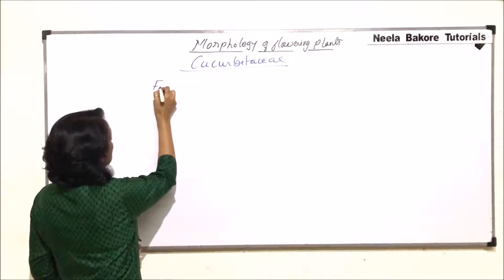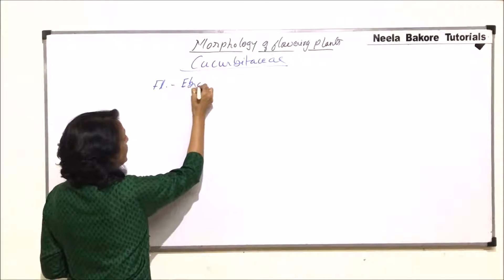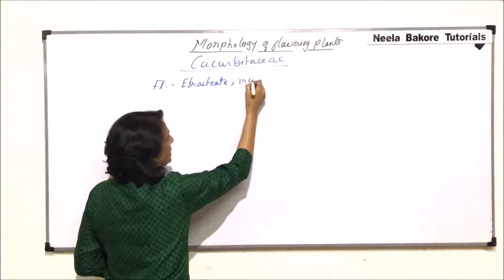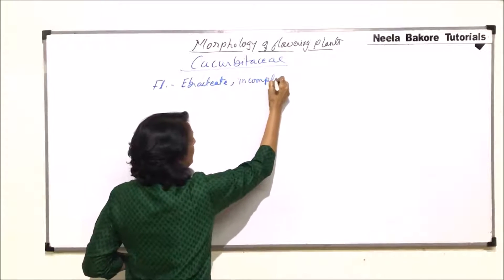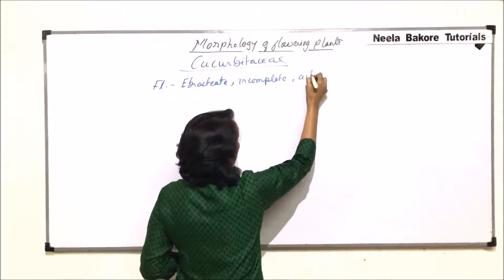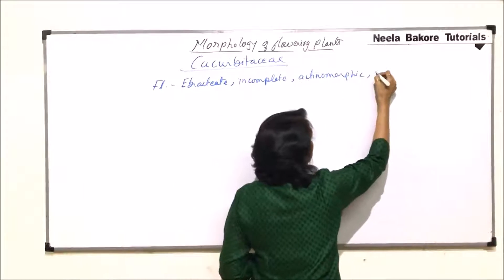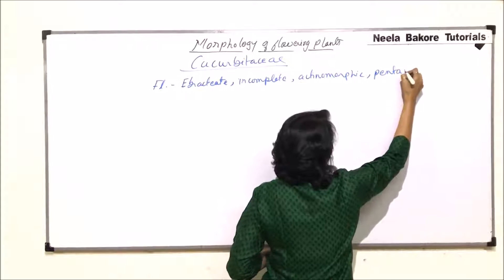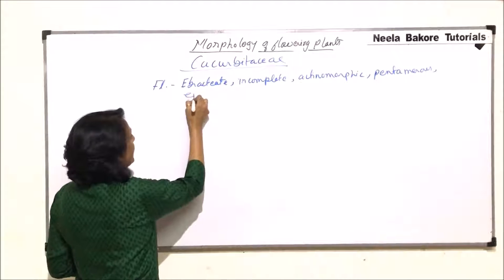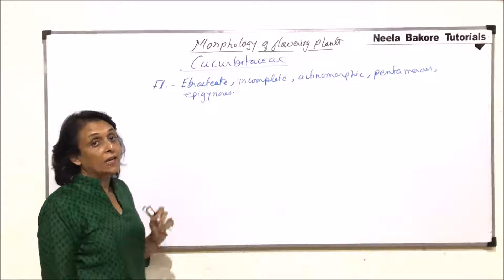We will first write down some important information about the flower. The flower is ebracteate, incomplete, actinomorphic, and pentamerous — that means everything is in multiples of five. The flower is epigynous, meaning the ovary is inferior.